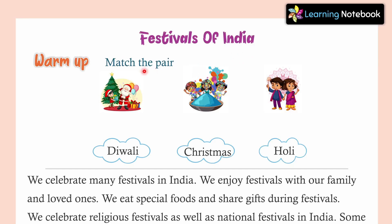Sab se pehle hum karte hai ek choti si exercise — match the pair. Here we are given with three pictures and we are also given with the names of these festivals, and we have to match them. The first picture features a Christmas tree, a Santa Claus, and gifts — so this picture is of Christmas. In the second picture we can see a lot of colors, so this picture is of Holi. And in the third picture we can see firecrackers, so this festival is of Diwali.